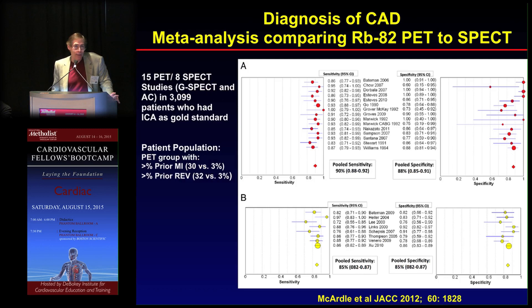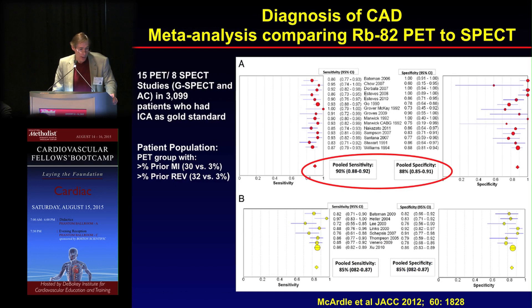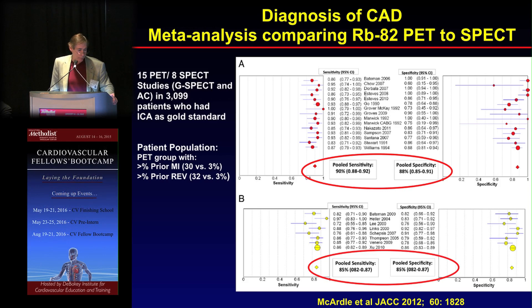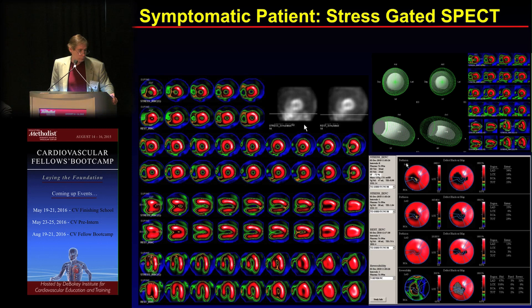In terms of how SPECT compares to PET, pooled data shows they are actually pretty comparable — about 88% for SPECT and 90% for PET. In terms of sensitivity and specificity, they are about the same. Pooled specificity also shows very comparable numbers between SPECT and PET.